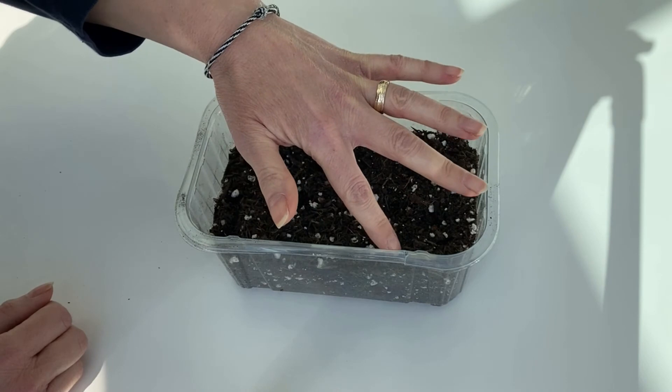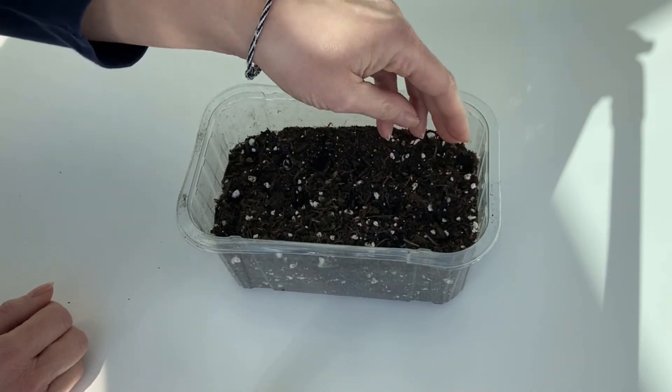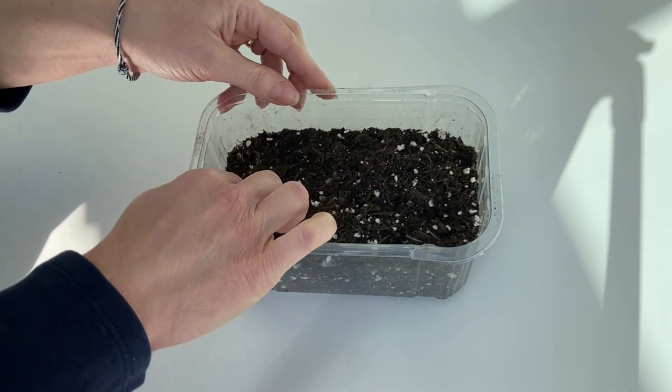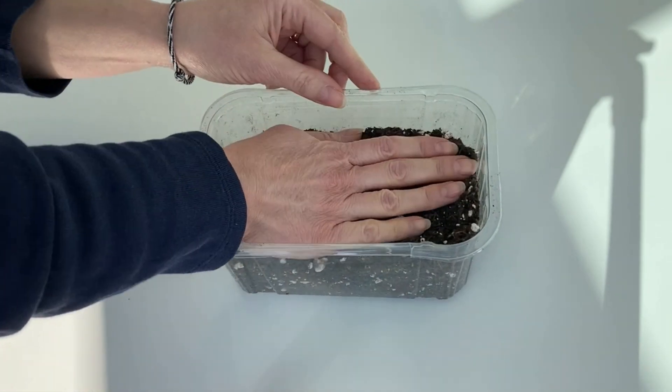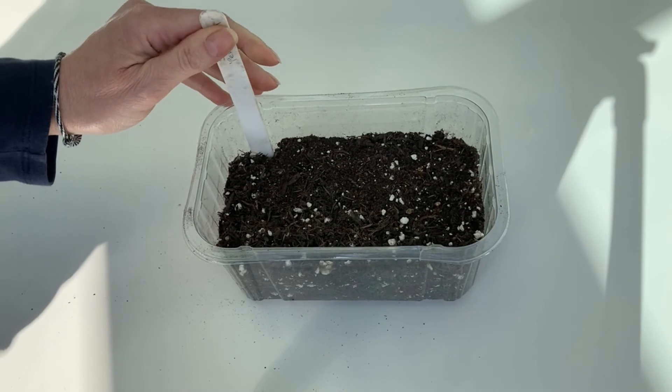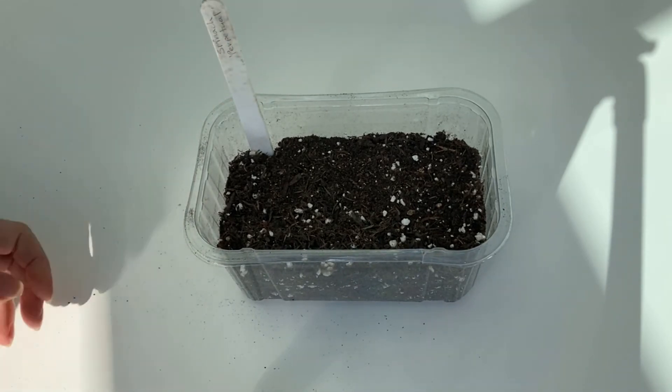I've just sown some seed in here, poked it down about a centimeter and lightly covered it over. I'll water these in well, label them up and pop them on a warm windowsill. These all get started so that I can transplant them for growing on in the greenhouse, but I will also direct sow some outside in my garden.